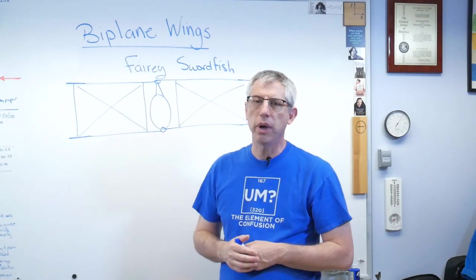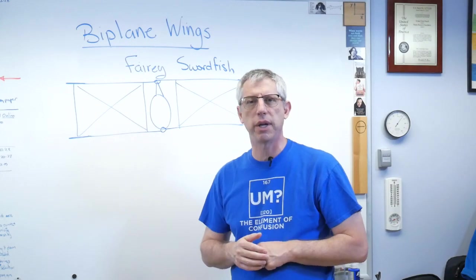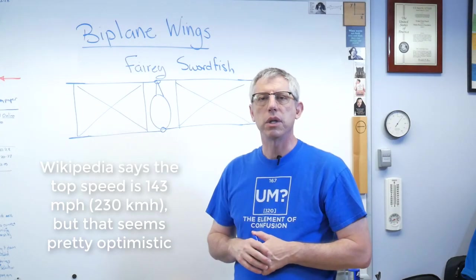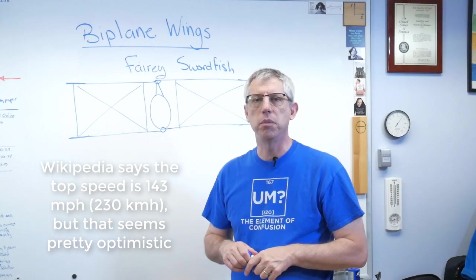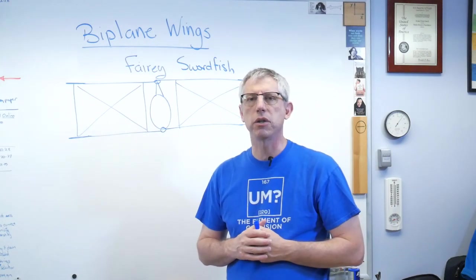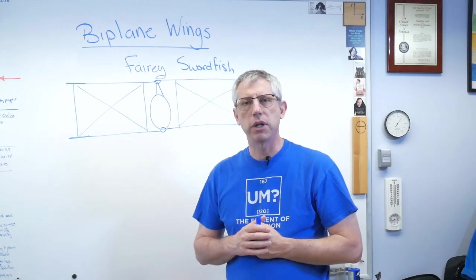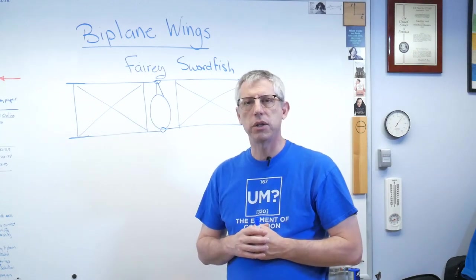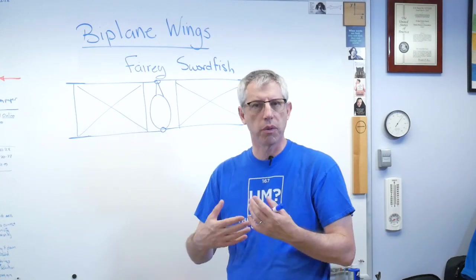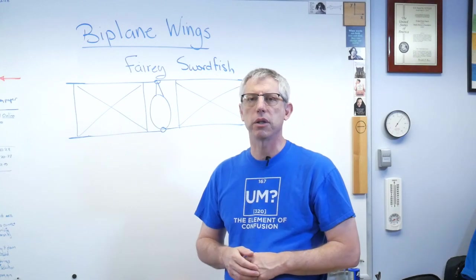The high point of the Fairey Swordfish — which had a top speed of about 100 miles an hour, so 160 kilometers an hour — was in the sinking of the German battleship the Bismarck. In absolutely horrible weather, a couple of Fairey Swordfishes with their little torpedoes found this ship, and one of them managed to hit the back of the ship and jam the rudder over. They were unable to fix the rudder, and then the British caught up to it and sank the ship.